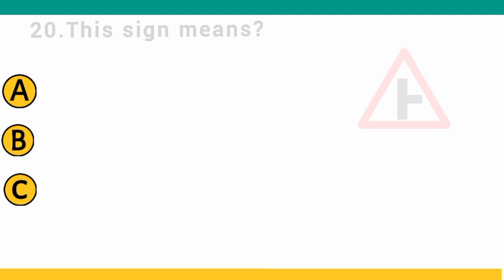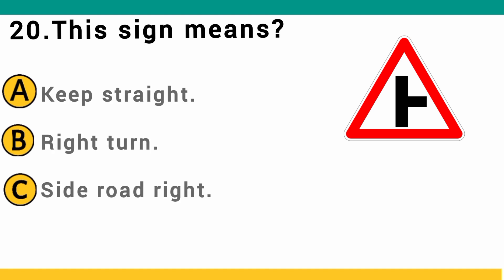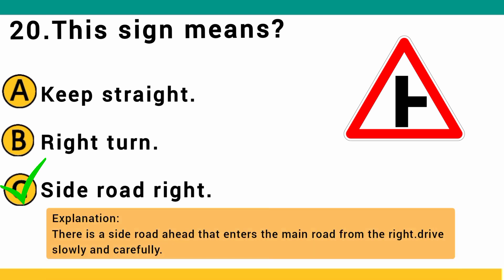This sign means: A) keep straight, B) right turn, or C) side road right. The correct answer is C: side road right. There is a side road ahead that enters the main road from the right — drive slowly and carefully.